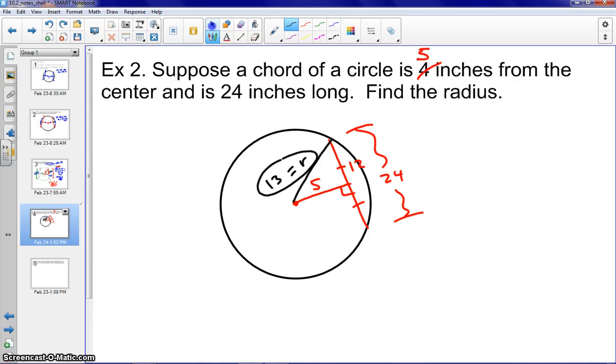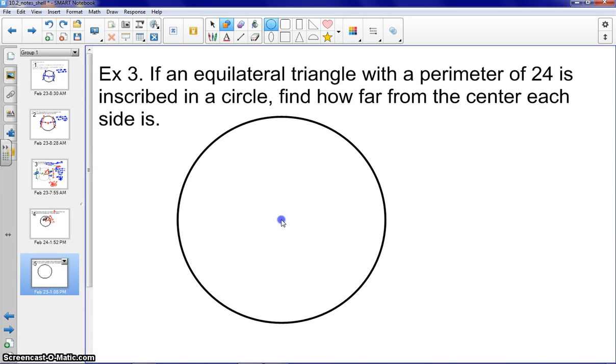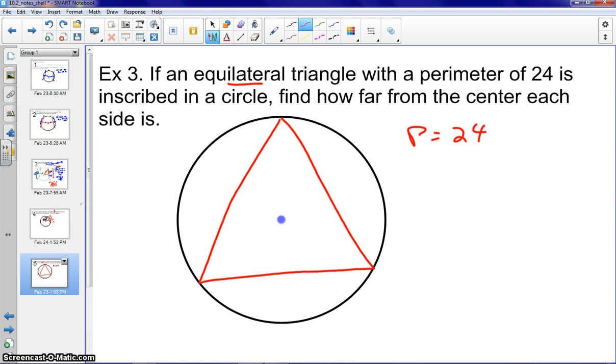And our last example, example 3. We have an equilateral triangle with a perimeter of 24 inscribed in a circle. How far from the center each side is is what we're looking for. So let's draw our circle. You want to make these fairly large, so you have plenty of room to do your work when you're actually drawing in your radii and drawing in your equilateral triangle and such. So please make those a decent size so you're not really trying to scrunch your work in. So we know it's an equilateral triangle. And we know the perimeter is 24. Therefore, all the sides are congruent. So we get each side to be 8. So we can label those as 8. All these would be 8.